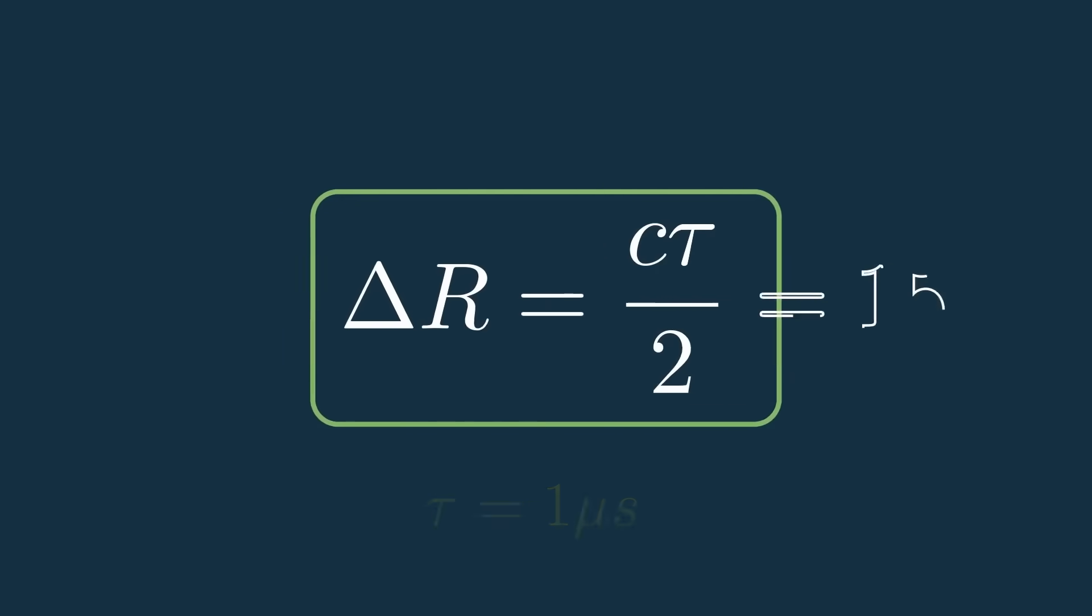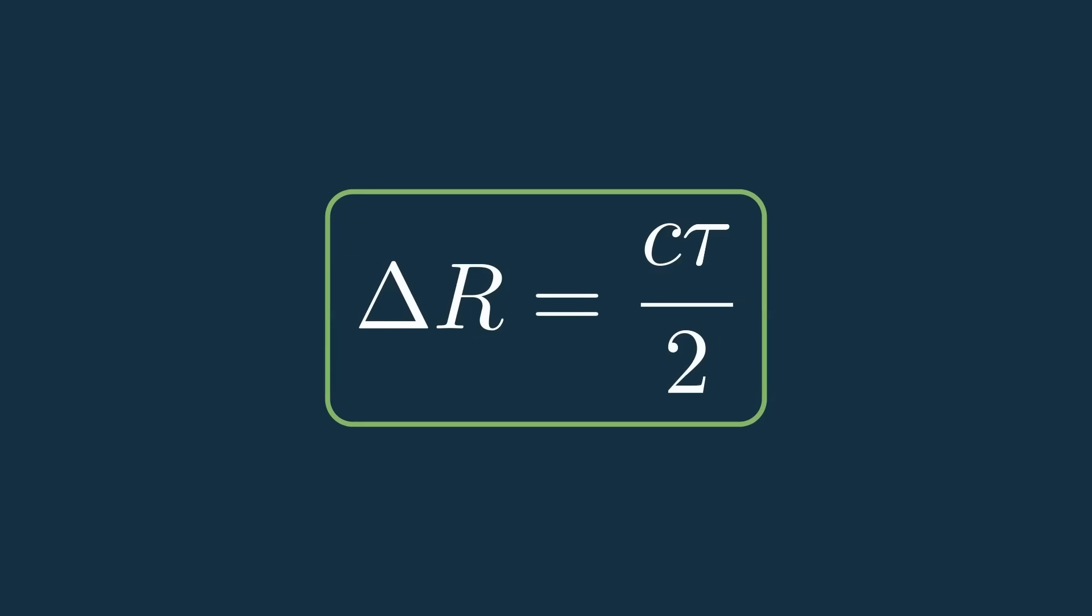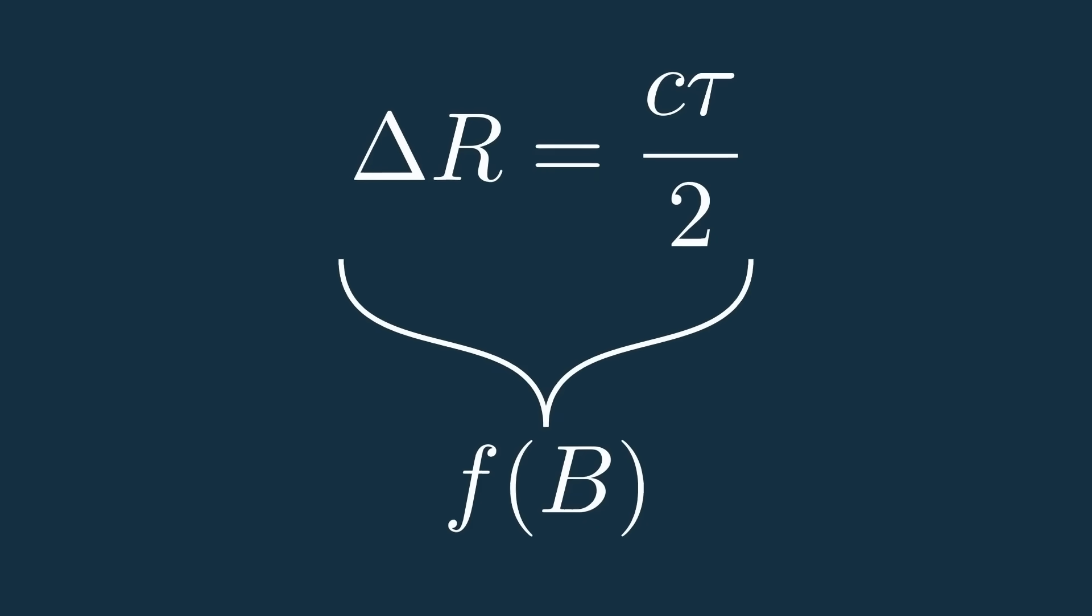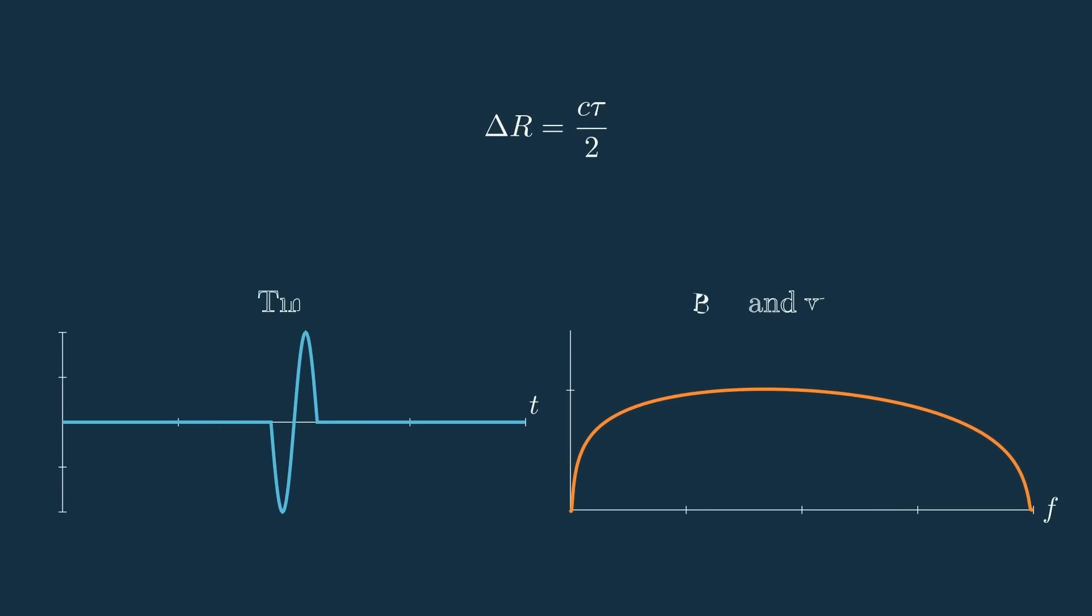If you've seen the range resolution equation before though, this might not be what you expect. Often times this is expressed as a function of the signal's bandwidth instead, so how do we get it from a function of tau, which is in time, to a function of bandwidth, which is in frequency?